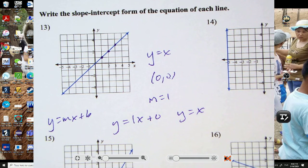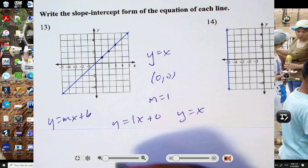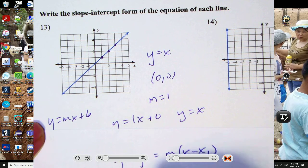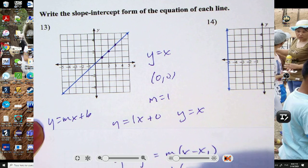Another option is using this point-slope form, so you have this form, y minus y1 equals m times x minus x1. So y minus 0, slope is 1, x minus 0.